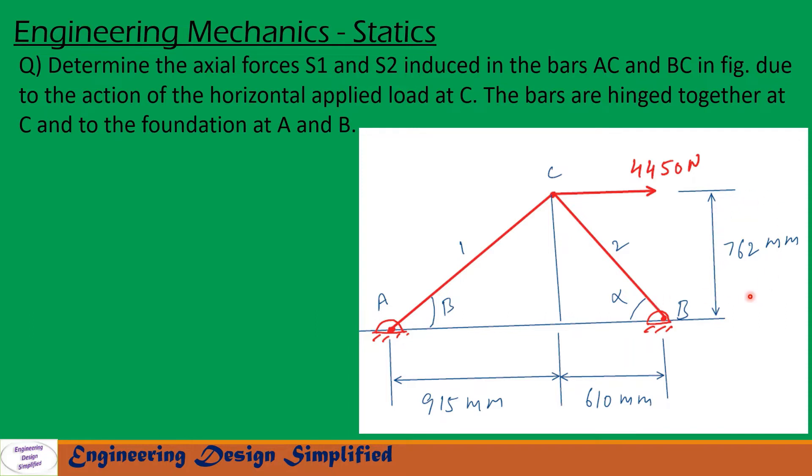The dimensions given are shown in figure: the height is given as 762 millimeter, distance from here to here is given as 610 millimeter, and distance from here to here is given as 915 millimeter. Let us call this angle beta and this angle alpha. Let us see in the coming slides how to solve this problem.